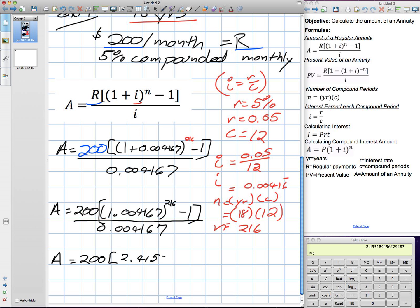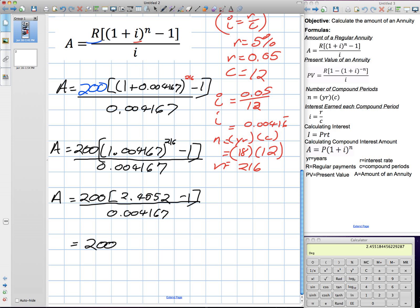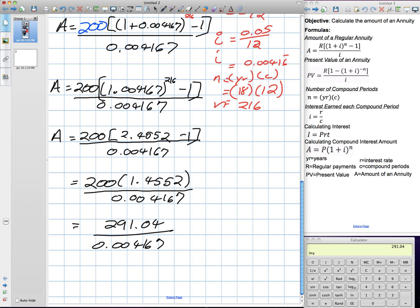So A is equal to 200, and then in brackets 2.4551 subtract 1, divide it by that decimal at the bottom. When we subtract that, we end up with 200 times 1.4552 divided by 0.004167. So 200 times 1.4552 is 291.04, then divided by 0.004167. There we go.